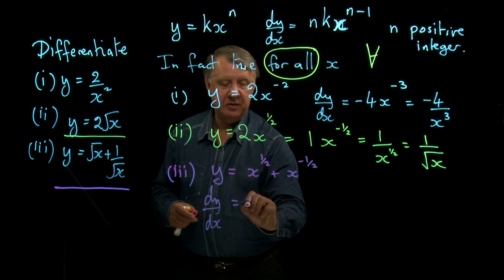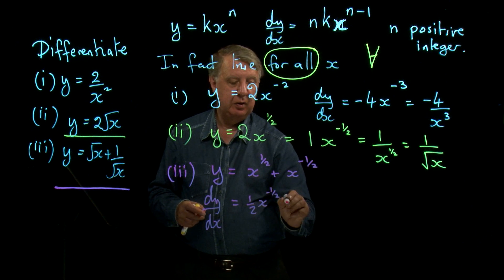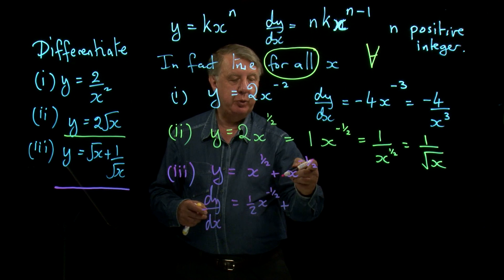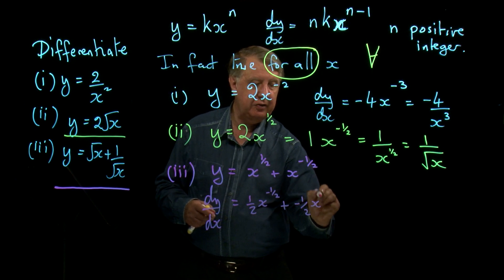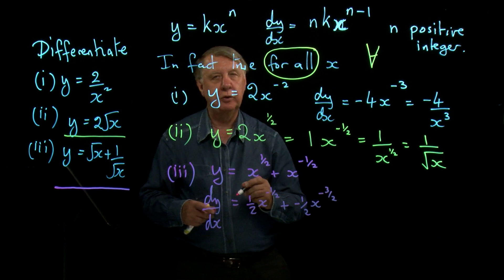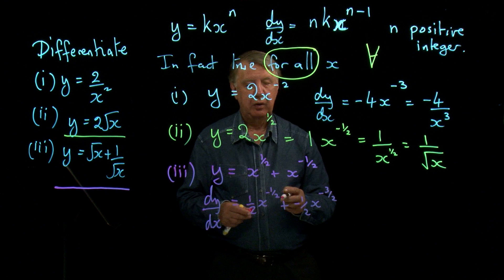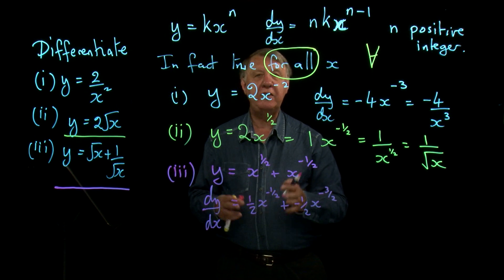Bring down the power, that's a half, x to the minus a half, plus, bring down the power which is minus a half, x to the minus 3 over 2. That is the correct answer. It's very messy.